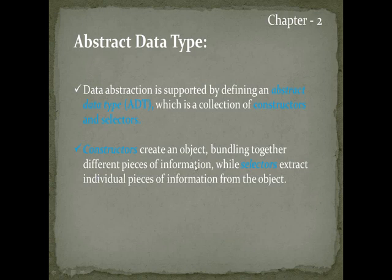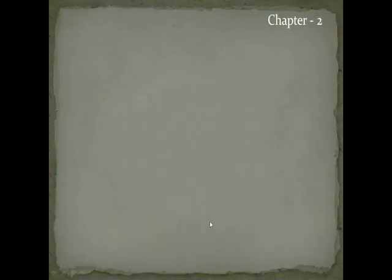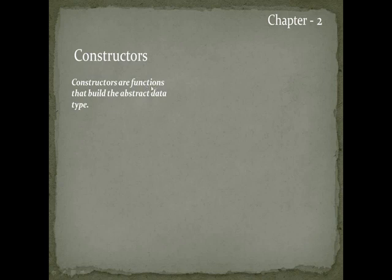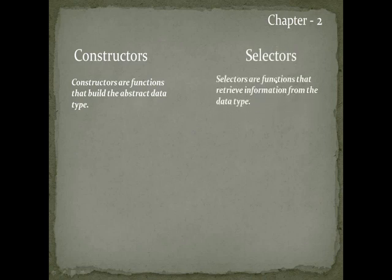Constructors create an object by bundling together different pieces of information — you can compare this with constructors in C++. Selectors extract individual pieces of information from the object. In summary: constructors are functions that build the abstract data type, and selectors are functions that retrieve information from the abstract data type.